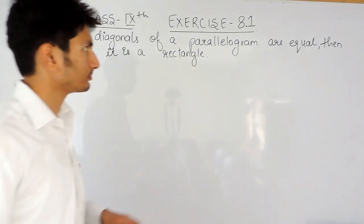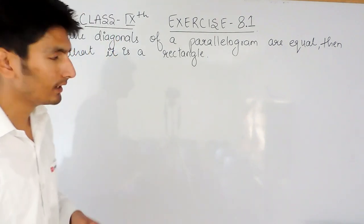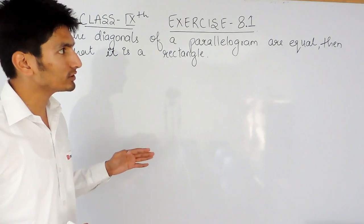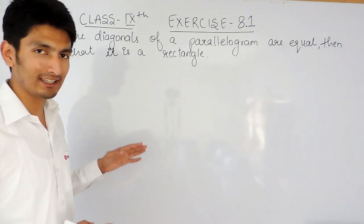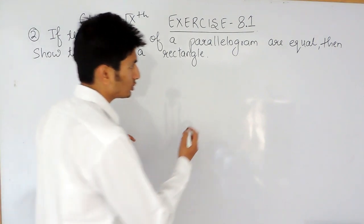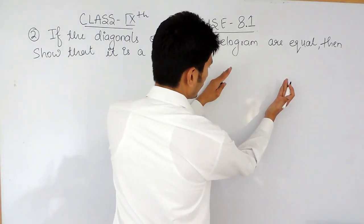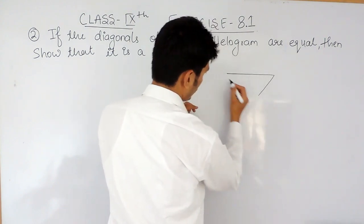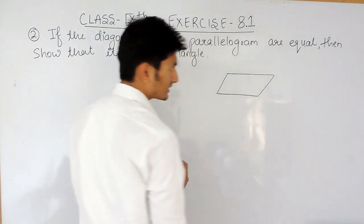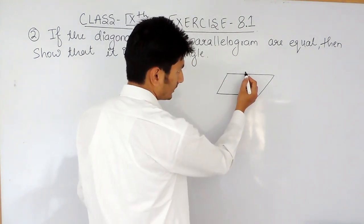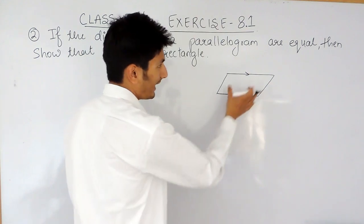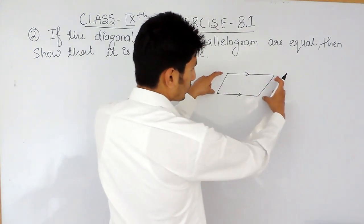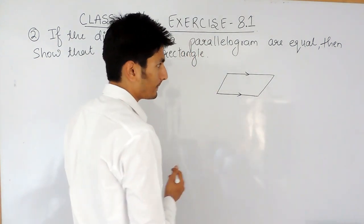Now, what is a parallelogram? A parallelogram is a closed figure in which opposite sides are parallel and equal. If I visualize this, this is a parallelogram. In this figure, one pair of opposite sides is equal and parallel to each other, and similarly the other pair of opposite sides is also parallel and equal.